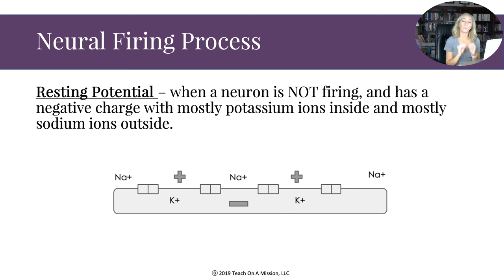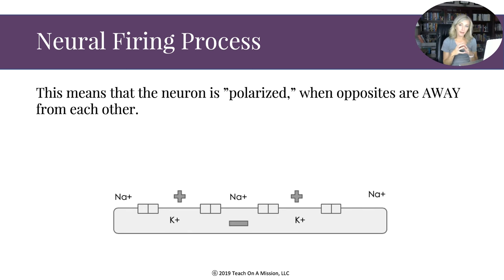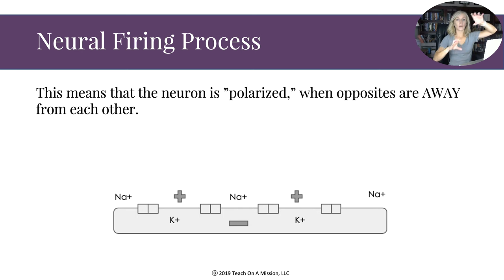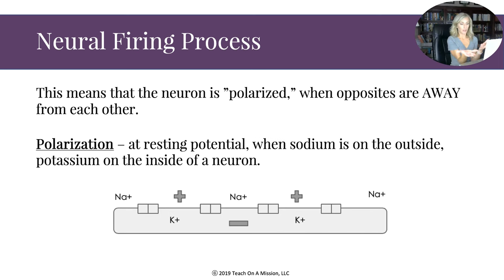At resting potential, the neuron has mostly potassium ions (K+) inside and mostly sodium ions (Na+) on the outside. This means the neuron is polarized — think of the north and south pole, like magnets pushing away from each other. Sodium and potassium are separated at resting potential, so the neuron is polarized.